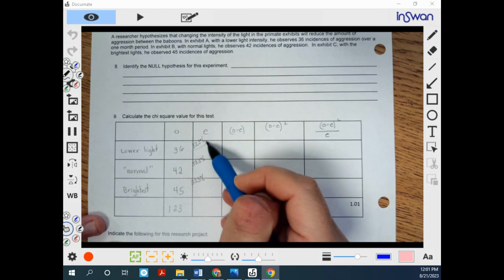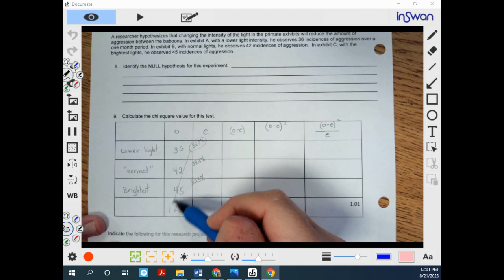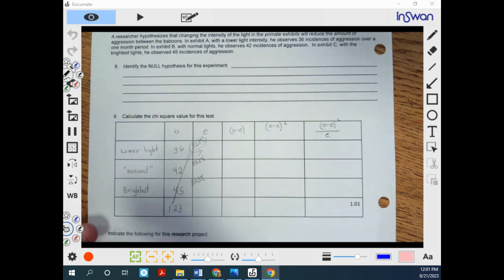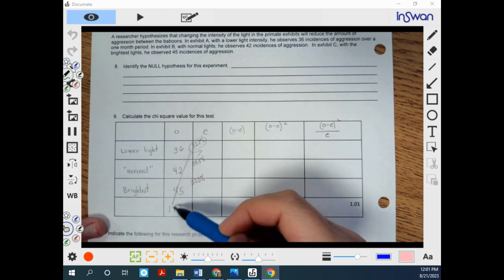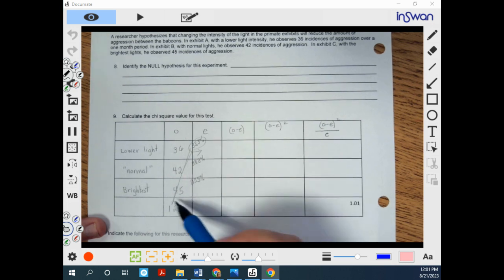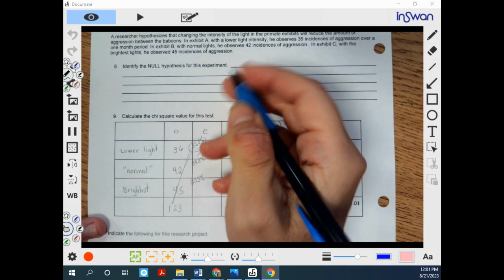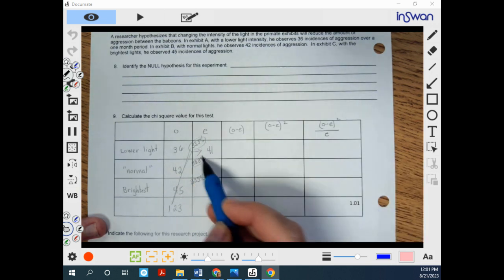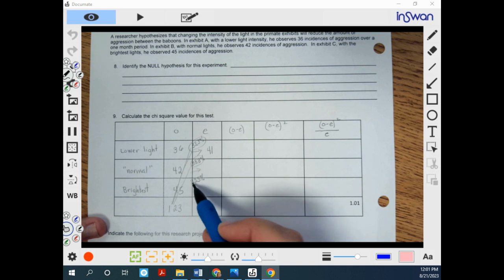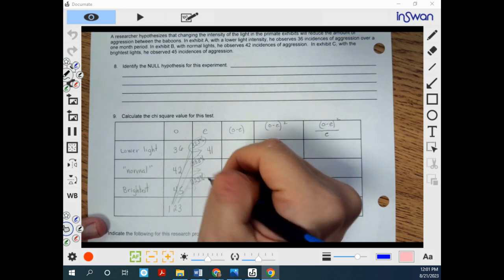Now, we're going to take this percent times the total on the bottom. And that's going to give you your number right there. So 33.3% or 0.333 times 123 because that's how many different incidents occurred gives us 41. And then the same thing, of course, it's going to be the same answer every time on this one. So it's 41.